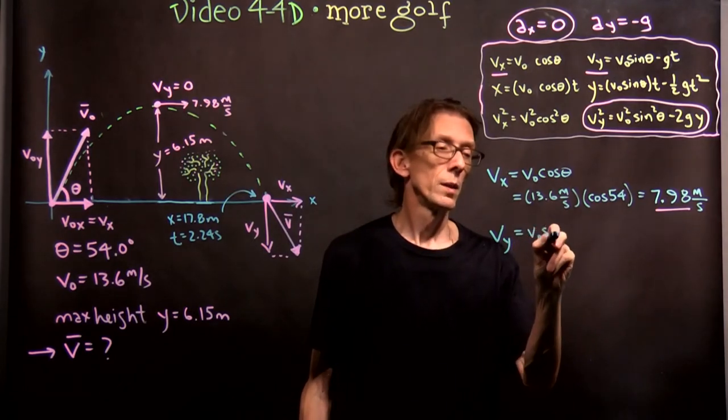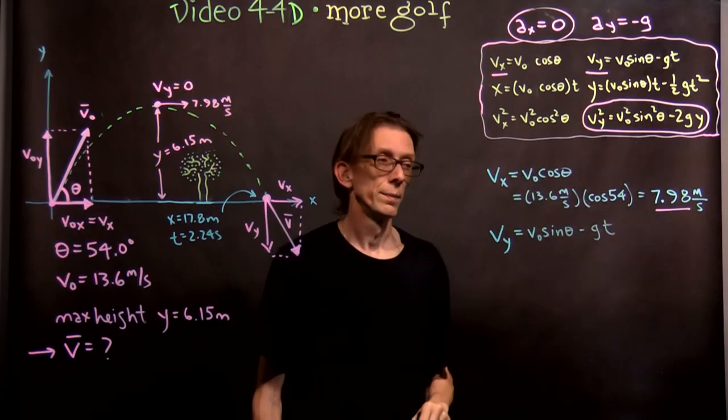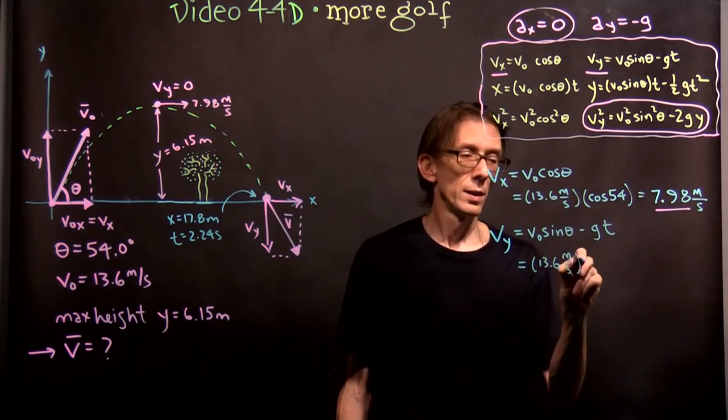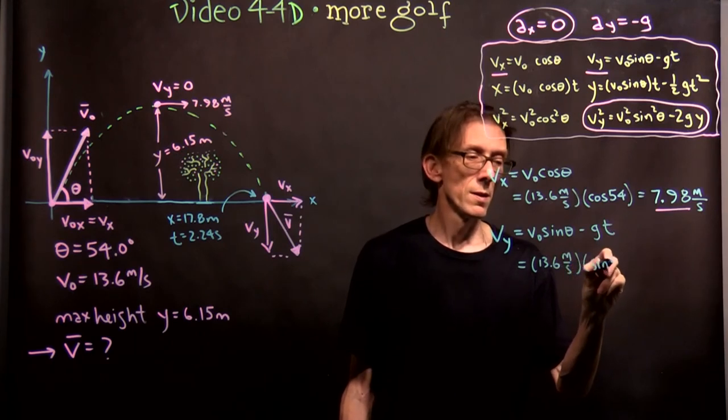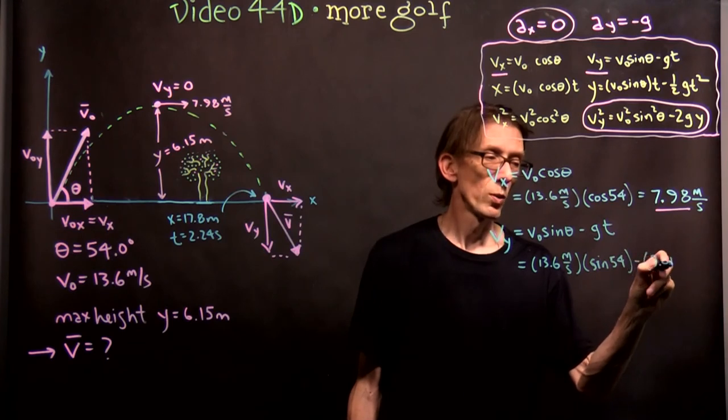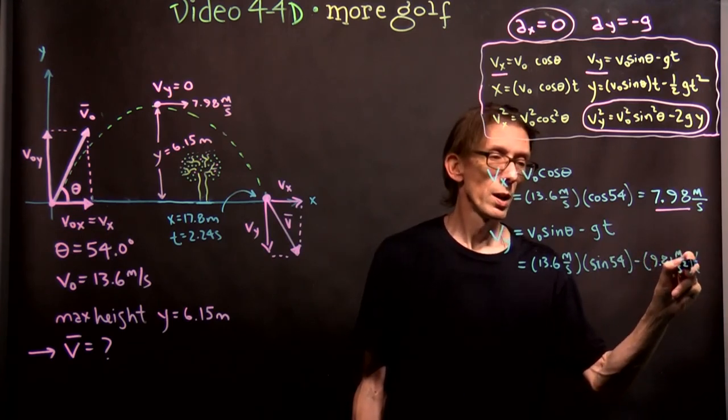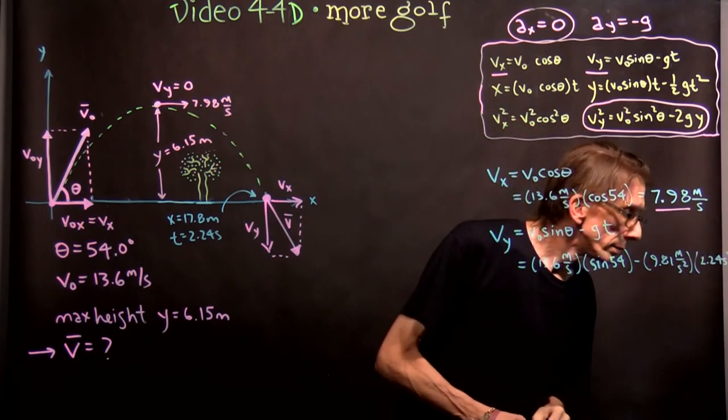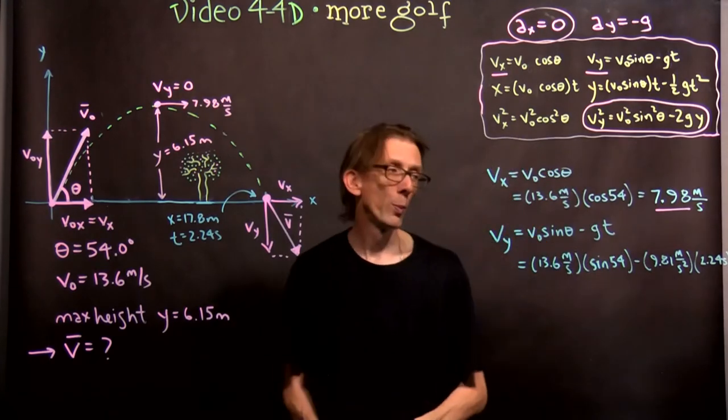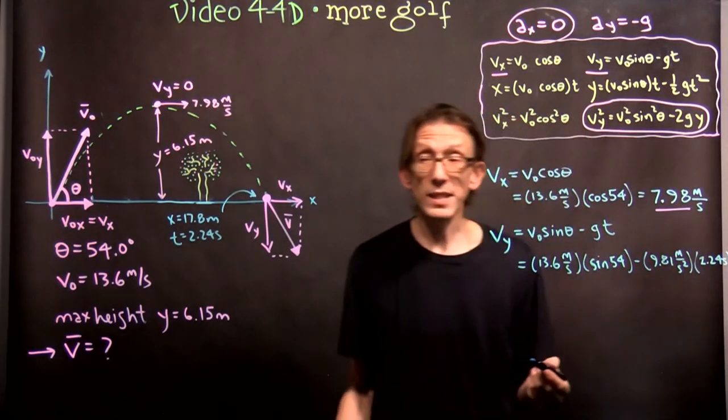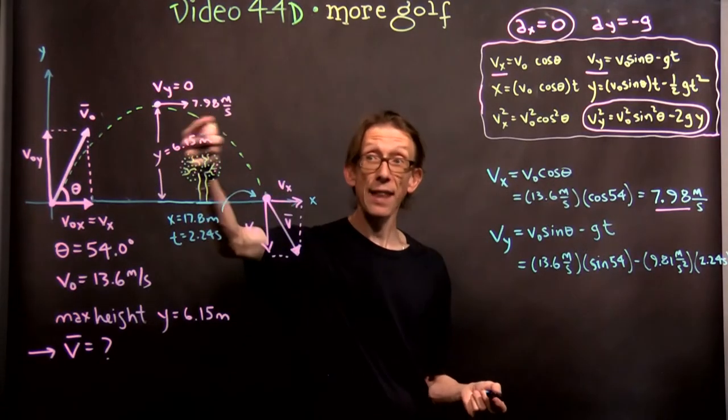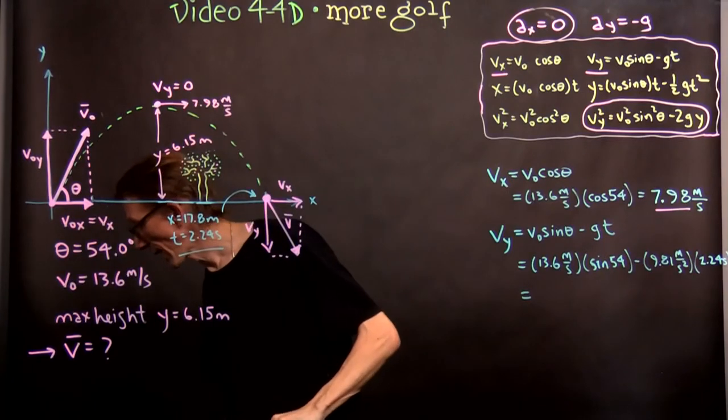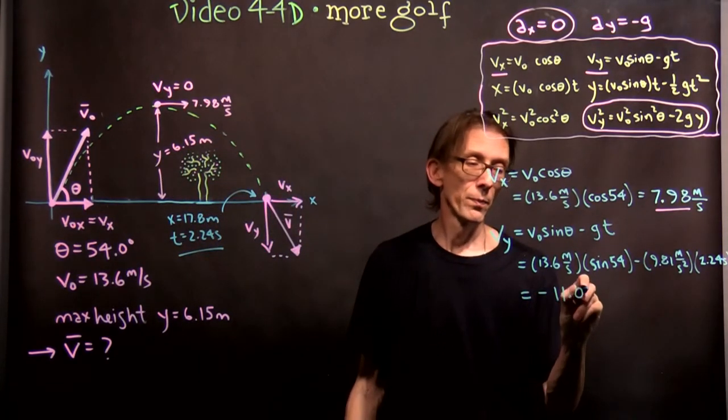So, it's going to be V naught sine theta minus g t. And so we can plug our numbers in. Thirteen point six meters per second, sine 54 minus 9.81 meters per second squared, times the time is 2.24 seconds. But we're asking for the velocity at the end of the motion, right? So that is at the end, when the time is 2.24 seconds. Plug in your numbers and turn the crank, and whammo, you get negative 11.0 meters per second.